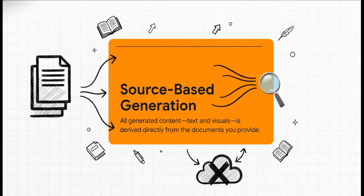The secret sauce is a concept called source-based generation. What that means is the AI isn't just pulling random information from the wider internet. No. Every single word, every single image it creates is based only on the documents that you provide. It's like a closed-loop system.